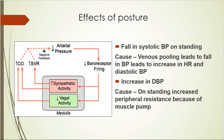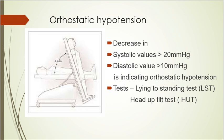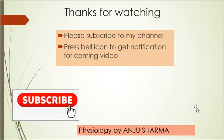An abnormality occurs if, on standing, the systolic fall is more than 20 mmHg or the diastolic fall is more than 10 mmHg — this indicates orthostatic hypotension. The tests used for this condition are the lying-to-standing test and the head-up tilt test. That concludes this practical.